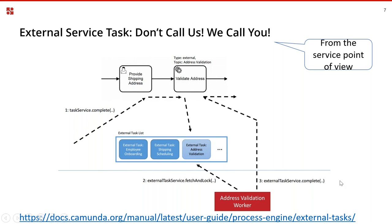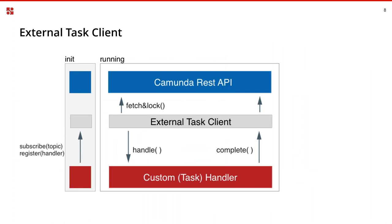At some point a worker starts up, polls for that work, gets it, does it, and then tells the engine it can continue. The really big benefit here is the complete decoupling of the actual business logic from the orchestration that Camunda is really good at. This means that while we're using JavaScript for this demo, it's actually possible to use whatever language you want — even multiple languages in a polyglot system.